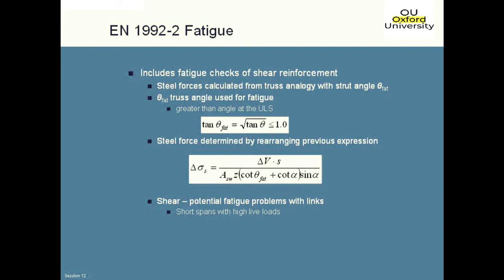Theta_fat is linked to the ultimate limit state by the expression: tan(theta_fat) = sqrt(tan(theta)). What that means is if you've gone for a flat angle at the ultimate limit state, your angle for fatigue calculations is always a bit steeper. That's really representing the fact that if you go for a very flat angle at the ultimate limit state, you're invoking a lot of plasticity — probably some yielding in the reinforcement — and at the serviceability range for fatigue, you're not going to have all that plasticity, so you'll be at a steeper truss angle.